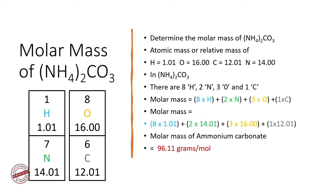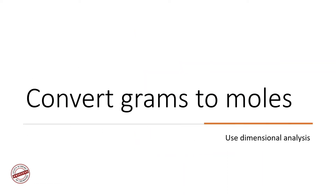That's how you can determine the molar mass of any compound. Molar masses of elements are simply their relative atomic masses, which can be directly obtained from the periodic table. Next we will convert grams to moles using dimensional analysis, and also moles back to grams.